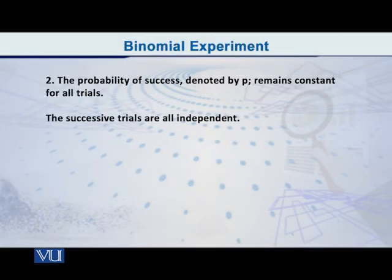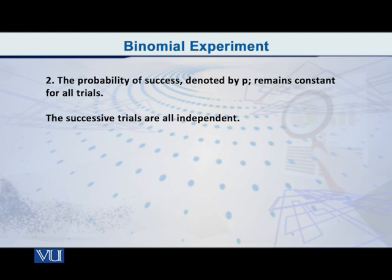What is the second condition? The second condition, as you are watching on the screen, is that the probability of success for every trial — that probability of success, which is denoted by small p — remains the same. For example, if I toss a fair coin, every time the probability of getting a head, if that is success, will be equal to one-half. Every time it will be one-half, not one-seventh.